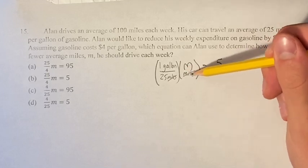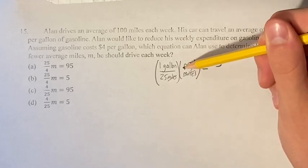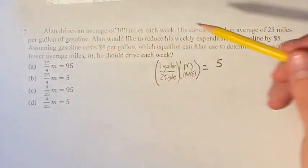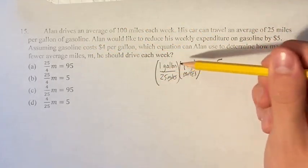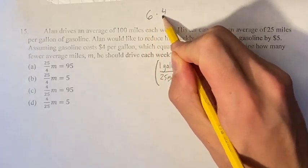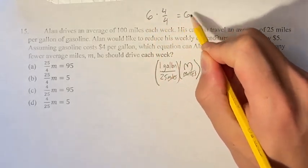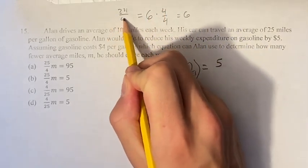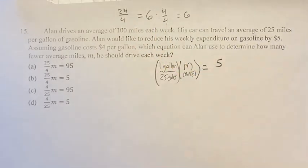And since you're multiplying M, which is our value, times what is basically 1, right? If he travels 25 miles per gallon, then 25 miles is equal to 1 gallon in this context. So this is like saying, okay, 6 times 4 over 4. Well, that's still equal to 6, but we do this because now we have 6 times 4 is 24 over 4.